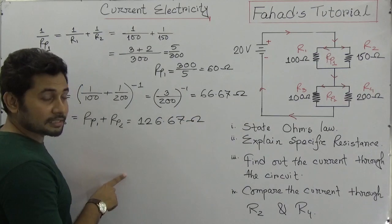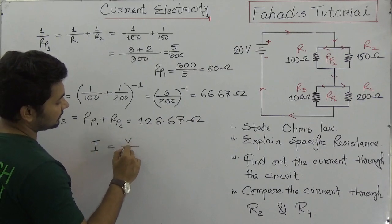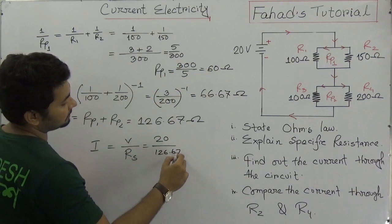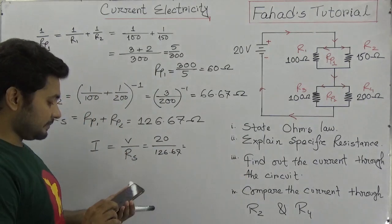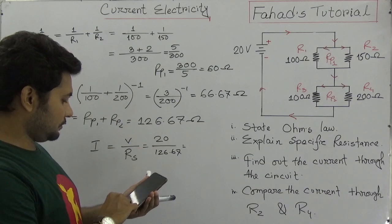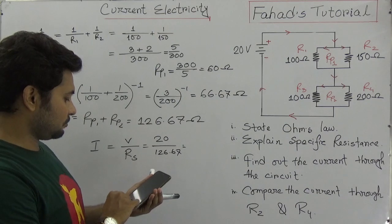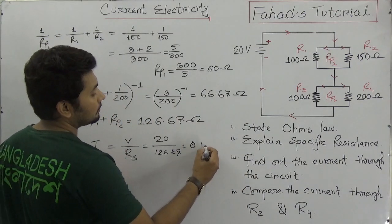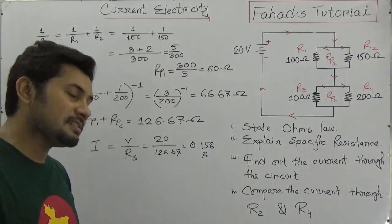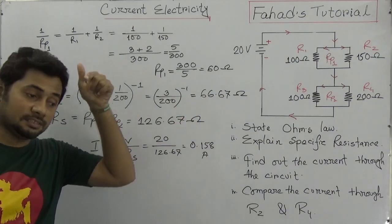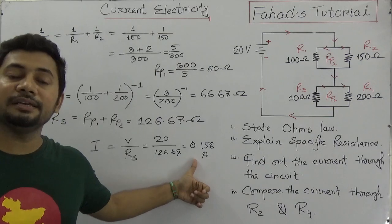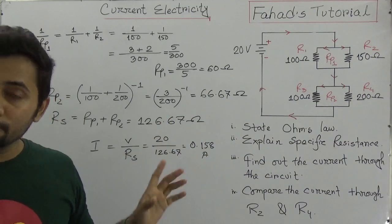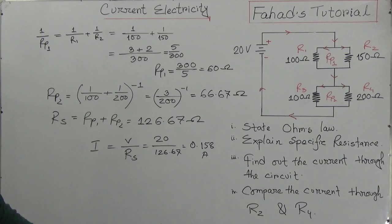To find the current I in the circuit, we use I = V/Rs. Here V is 20 volts and Rs is 126.67 ohms. So I = 20 / 126.67 ≈ 0.158 amperes. That is the current circulating through this circuit. We simply find the equivalent resistance and then apply I = V/R.